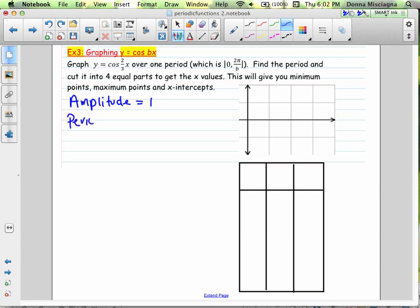The period for the graph is found by taking 2pi and dividing by b. Now b is the coefficient on x, so b would be two-thirds. So we're going to divide 2pi by two-thirds. Dividing by a fraction is the same as multiplying by the reciprocal. So that would be equal to 2pi times three-halves. And you can cancel those twos. And so you'd be left with 3pi. So that's the period.